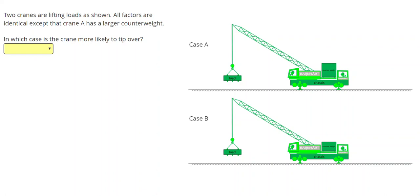When we're doing these problems, we are going to call this the rotation point, and we know that the crane tips over if the torque on the load side is greater than the torque on the chassis and counterweight side. Having a greater counterweight, so a greater force right here, makes this safer. So, the crane that's more likely to tip over is the crane with the smaller counterweight, or case B.